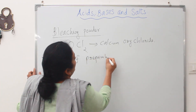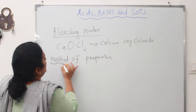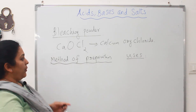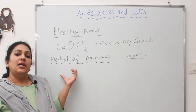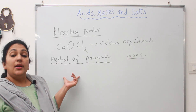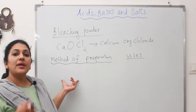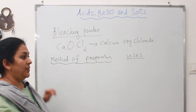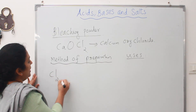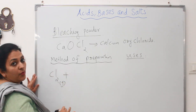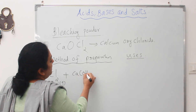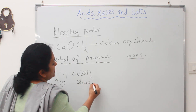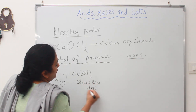Now let's learn about the method of preparation and uses of bleaching powder. Bleaching powder is made when chlorine gas is passed over dry slaked lime. It should be dry slaked lime, not wet.